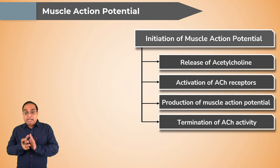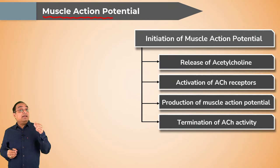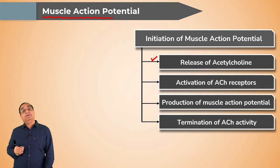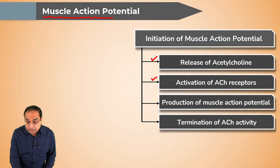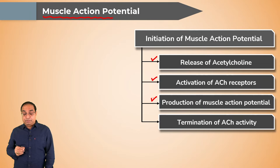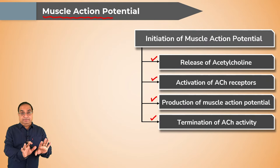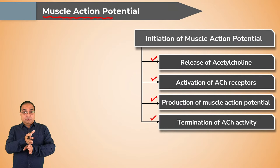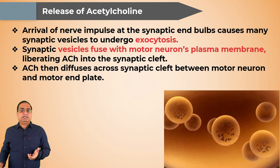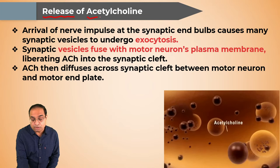Now I will explain how muscle action potential is generated. Initiation of muscle action potential involves: first, release of acetylcholine; second, acetylcholine binding to its receptors; third, activation of acetylcholine receptors; fourth, production of muscle action potential; and fifth, termination of acetylcholine activity by the enzyme acetylcholinesterase, which breaks acetylcholine into acetic acid and choline. If acetylcholine is not broken down, the muscle will remain in a continuously contracted state.